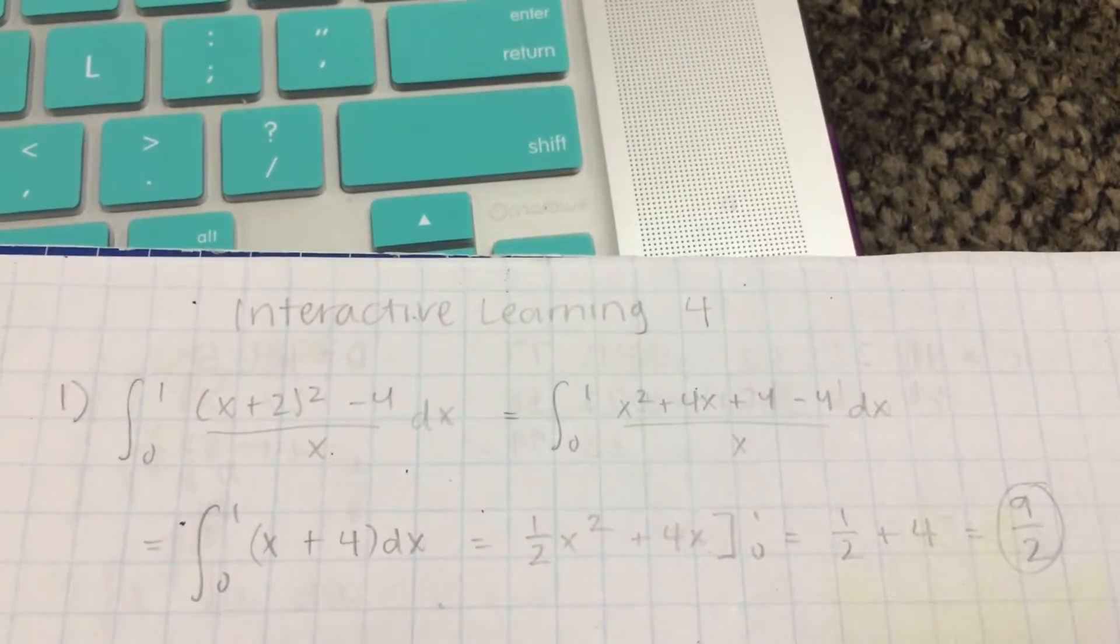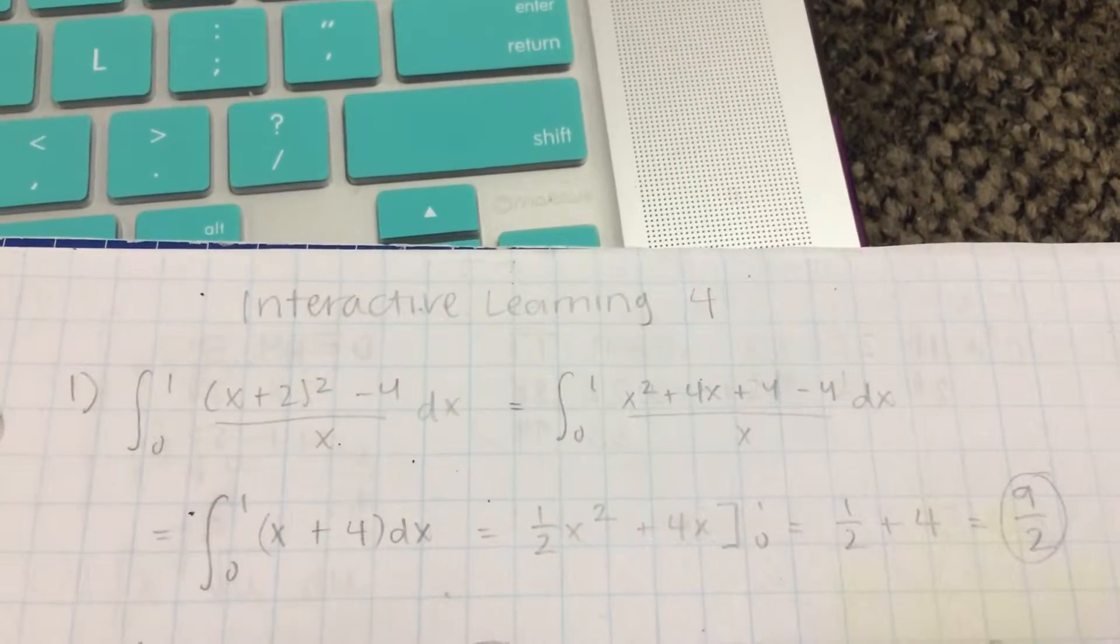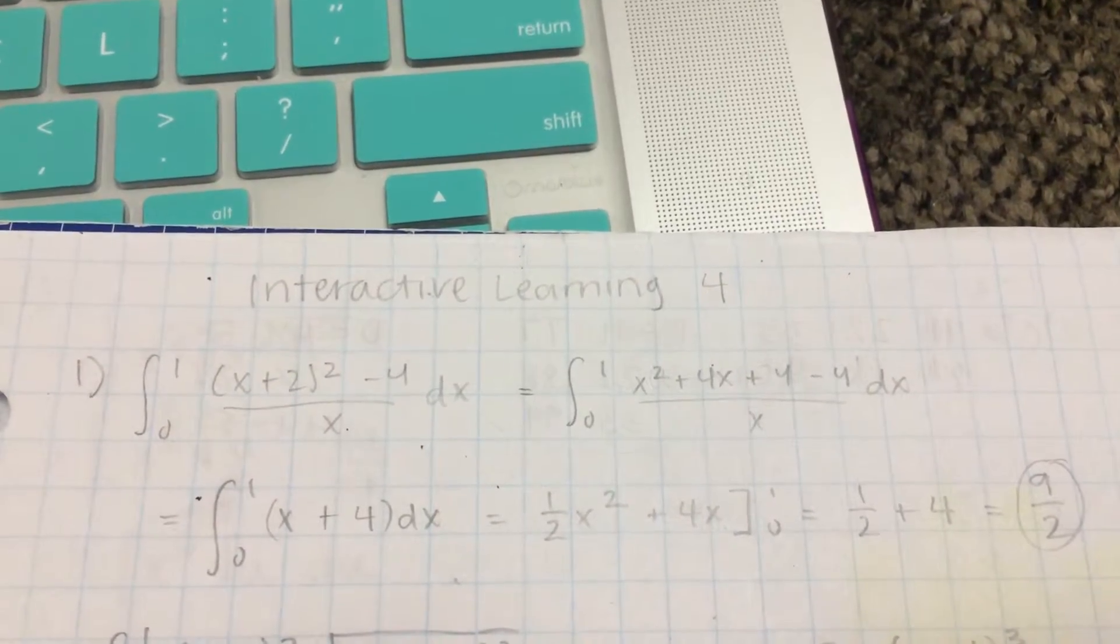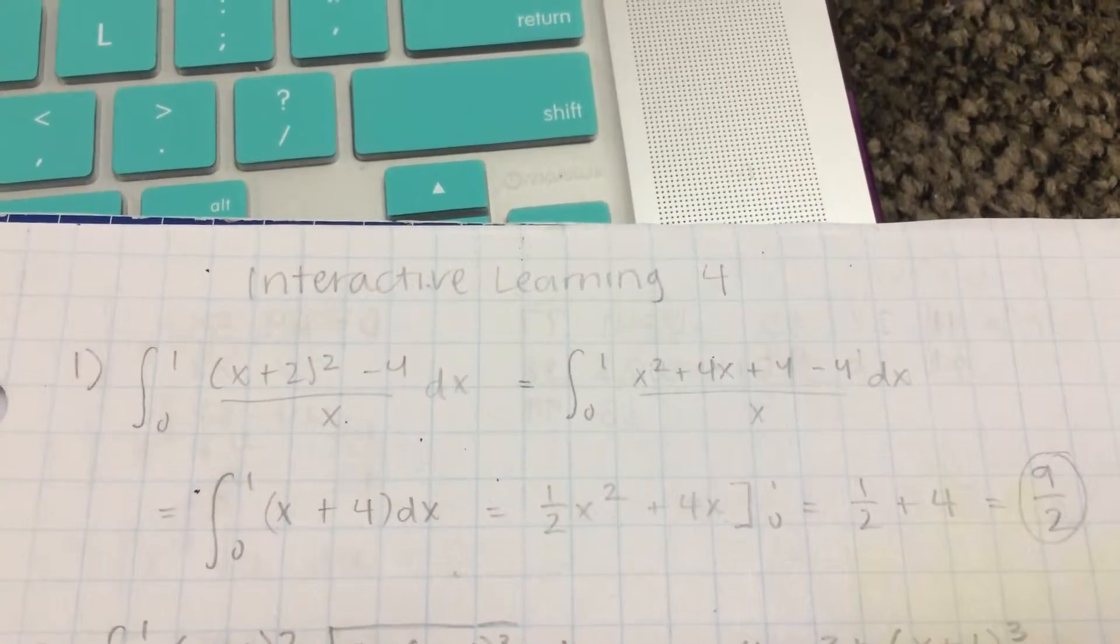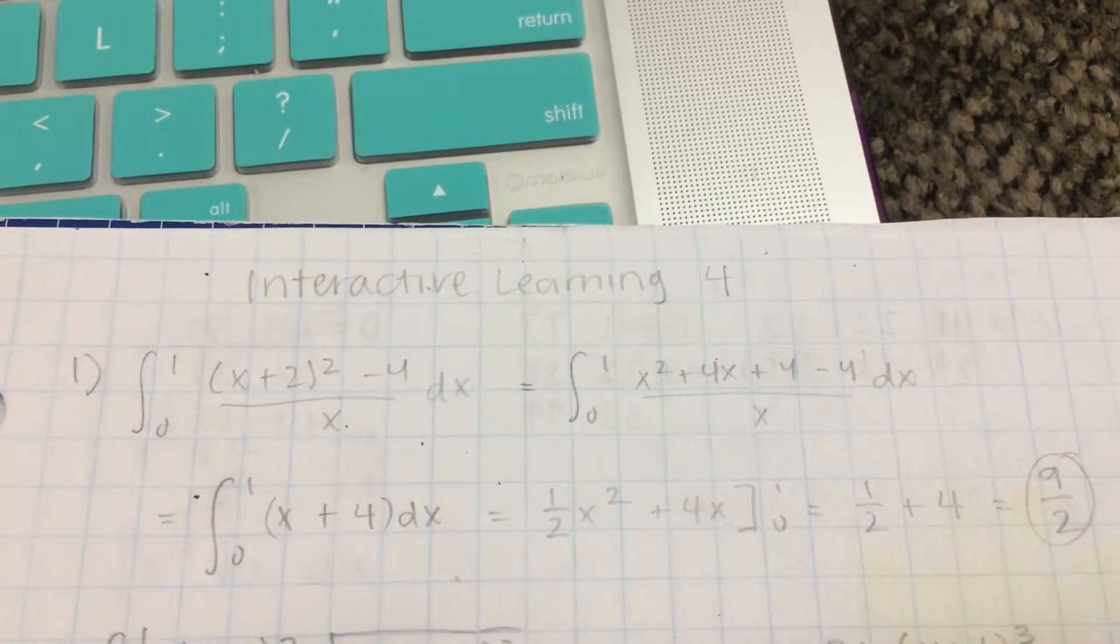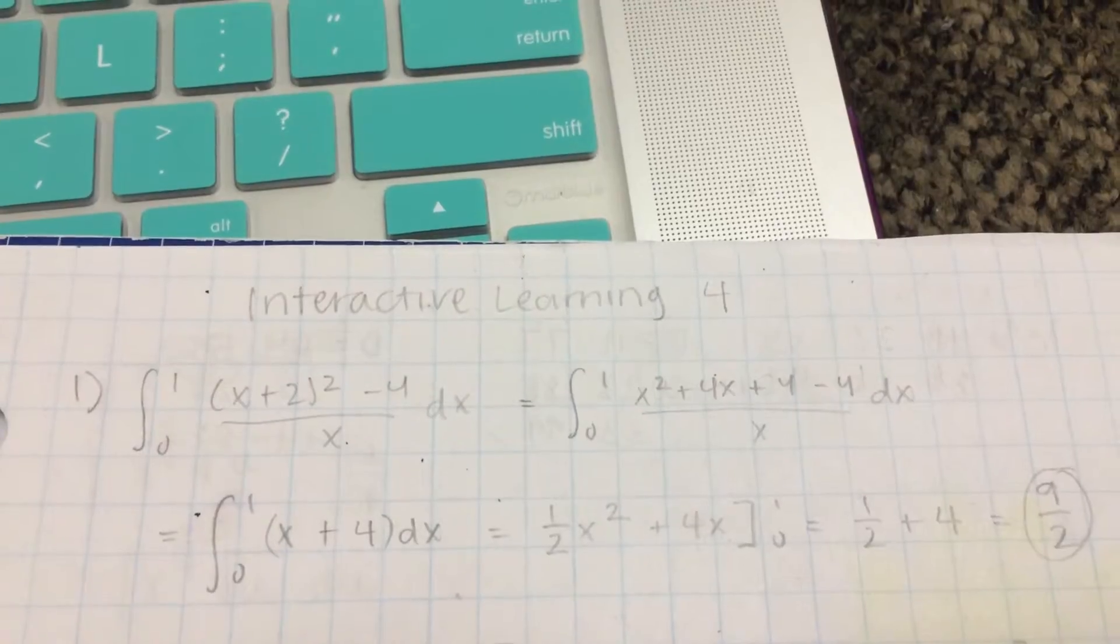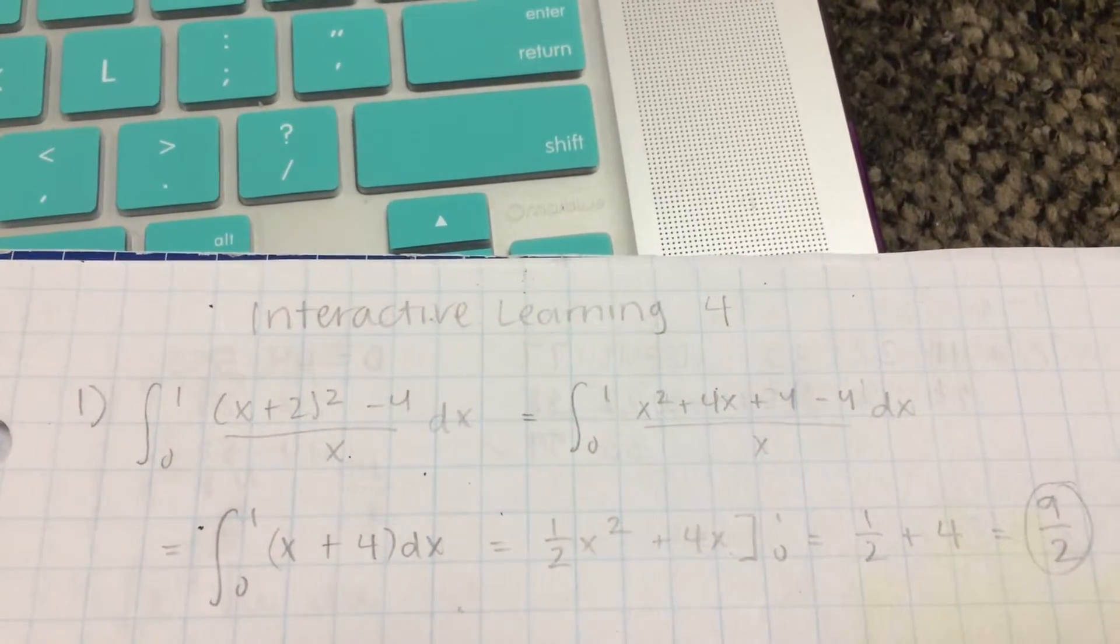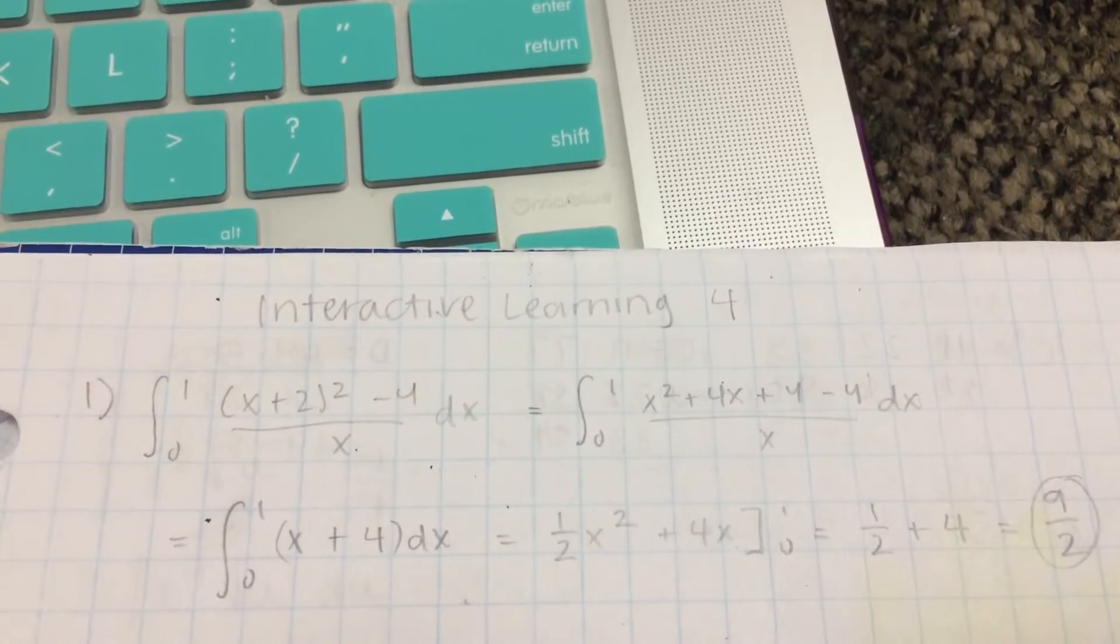So the first thing you're going to do is factor the top. So you're going to do 0 to 1 and then have x^2 + 4x + 4 and then minus 4. The 4 and the 4 cancel out, so you're left with x^2 + 4x over x dx.